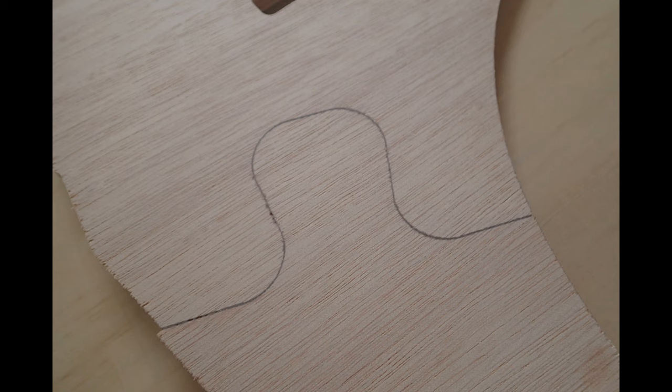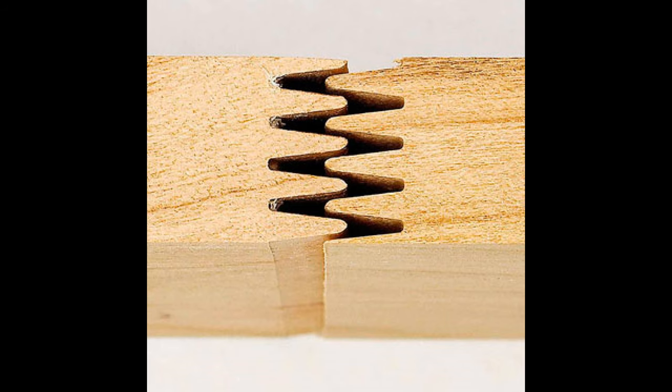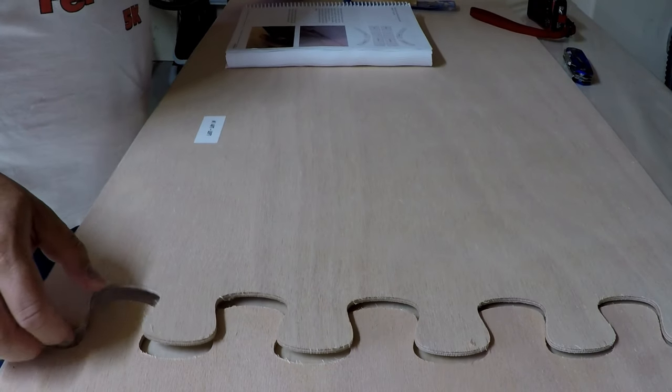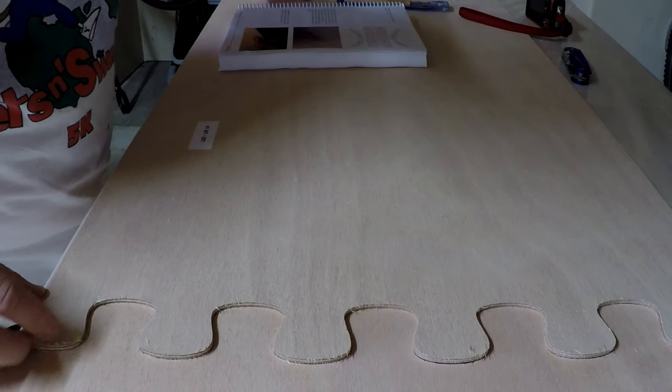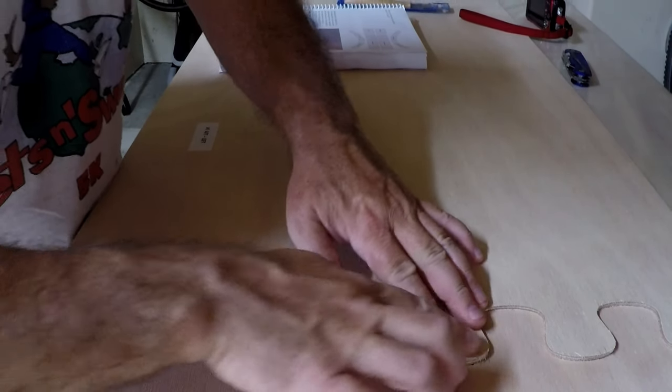Instead of butt joints or finger joints or one of the many other ways of joining wood end-to-end to make longer panels out of shorter, more commonly available plywood sizes, Chesapeake Lightcraft uses puzzle joints. They aren't old-time traditional in boat building, but then neither is plywood, fiberglass, epoxy, and building teardrop campers that don't float and have wheels.